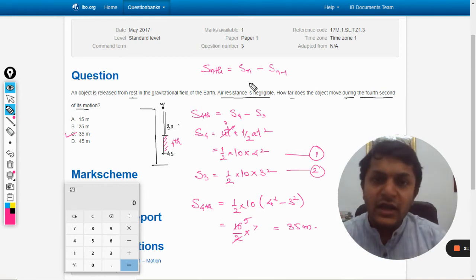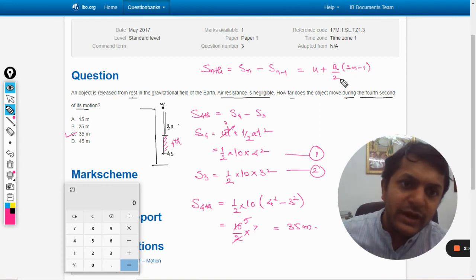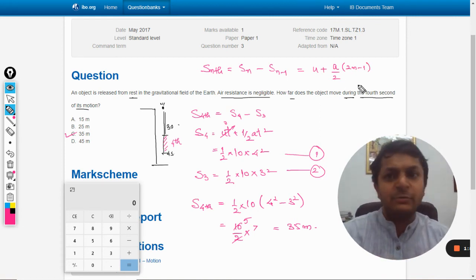We can create a general formula for that, and this formula that we learn is u + a/2 × (2n - 1). This is the formula. If you remember, you can directly apply this formula for the objectives.